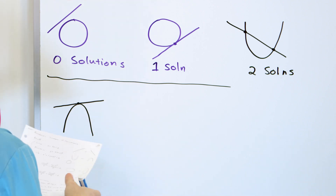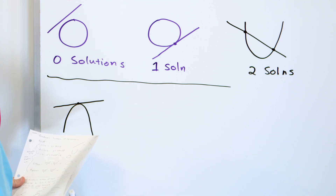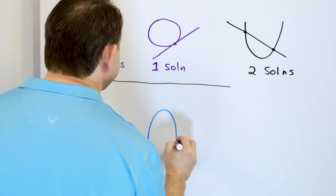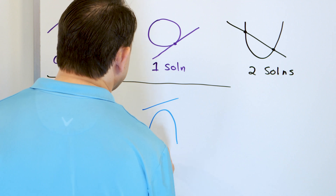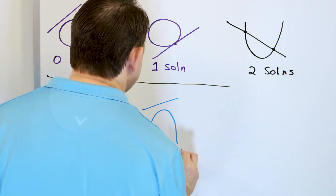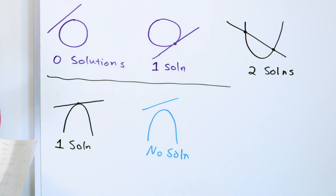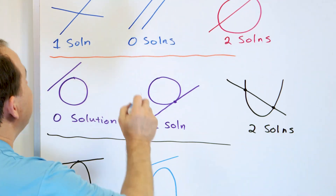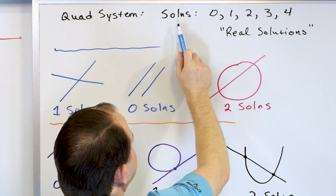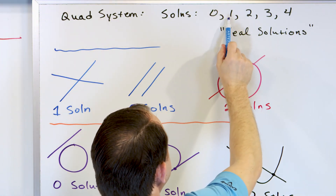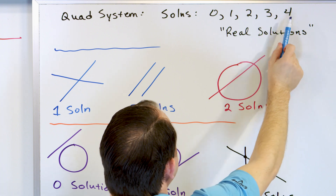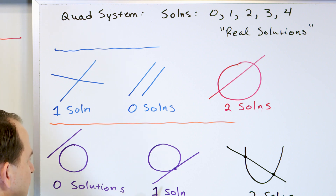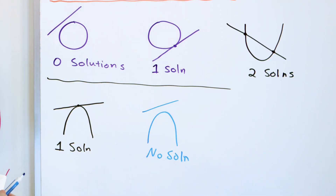That's a parabola and a line — you can also have a parabola with a line above it so there's no solution at all. So for a quadratic system, I said it can have real solutions: zero, one, two, three, or four. We've already seen zero, one, and two solutions on the board.